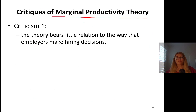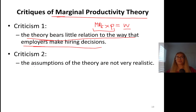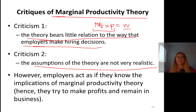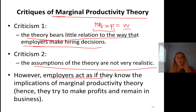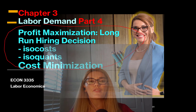Let's talk about the critiques of marginal productivity theory. The theory states that the marginal product of any factor of production times the price determines what we must pay that individual — the wage rate equals the value marginal product. Criticism one: the theory bears little relation to the way employers actually make hiring decisions. Criticism two: the assumptions of the theory are not very realistic. However, in real life employers act as if they know the implications of marginal productivity theory — they try to make profits and remain in business, which is consistent with the theory's predictions.